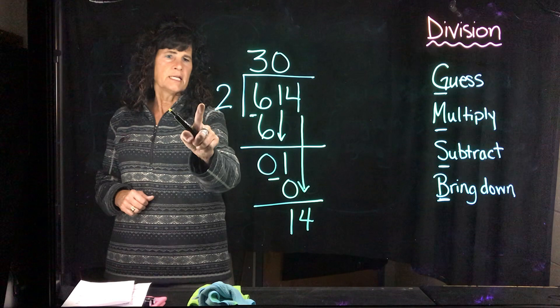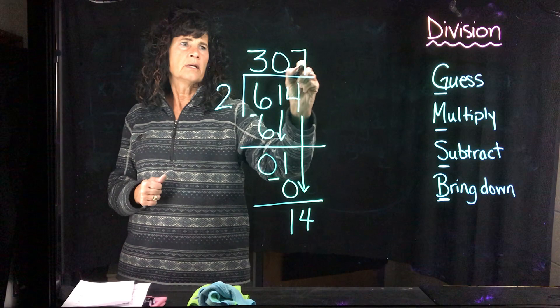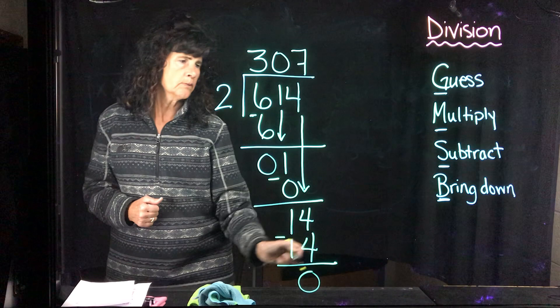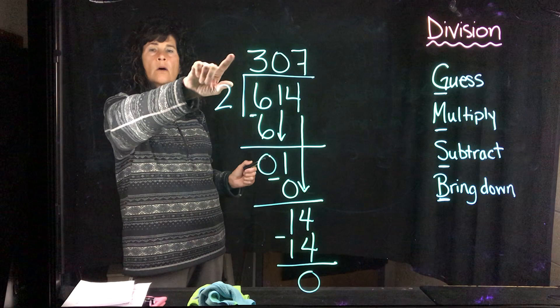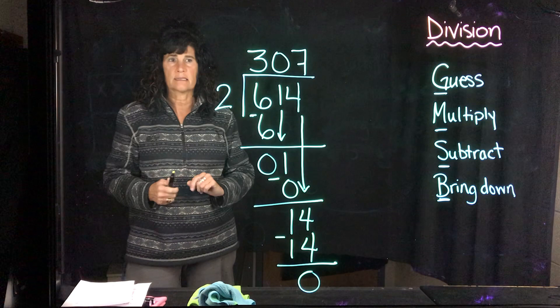Okay, now guess again. How many twos fit into 14? Well, I know that 2 times 7 is 14. Again, see how important these multiplication facts are. I'm going to put a 7 up here. I'm going to multiply. 7 times 2 is 14. Subtract. 14 minus 14 is 0. Bring down. Nothing there. I'm done. So again, my quotient or my answer is 307, which is the amount that one gets - the amount that one group gets.